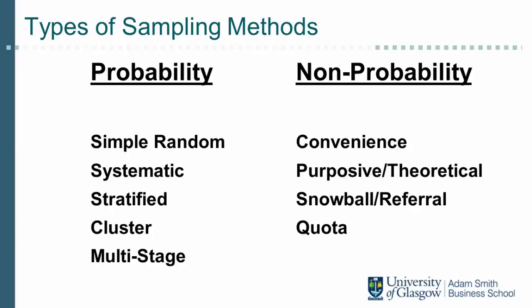The essential feature of probability sampling is that each element in the sampling frame has the same probability of being included in the sample, and that probability is non-zero. To use probability sampling we need to have a sampling frame — that is, a list of elements in the population that can be accessed or contacted. A sampling frame is necessary to determine each element's probability of being selected.